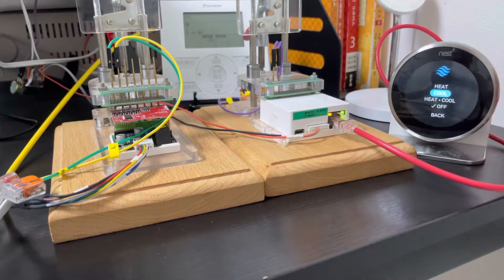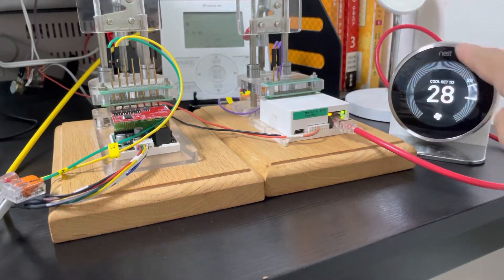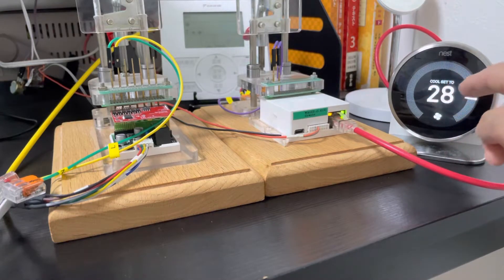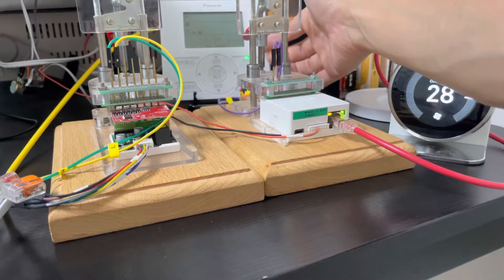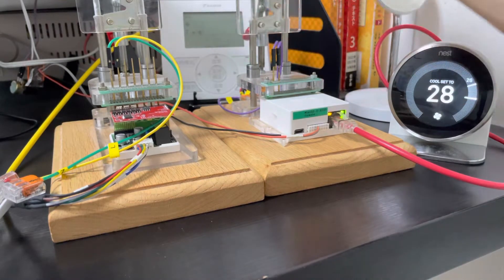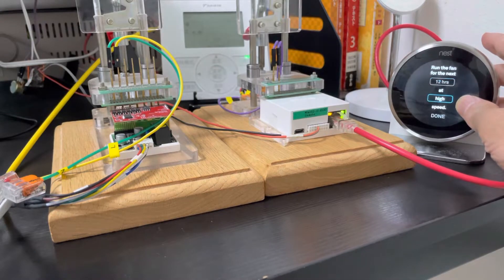Let's see if we change to cool. We turn on the fan mode of the nest. We see the original Daikin thermostat open the fan mode. Now we change the fan speed to high.